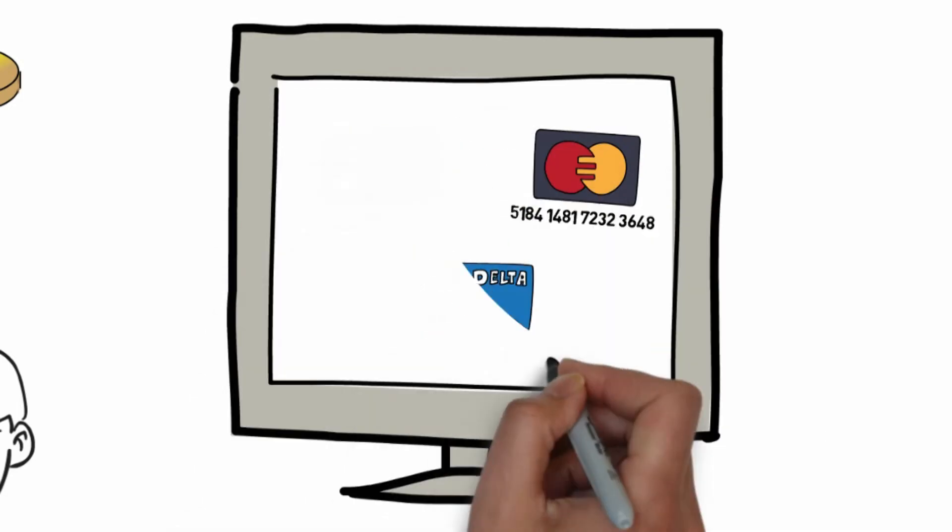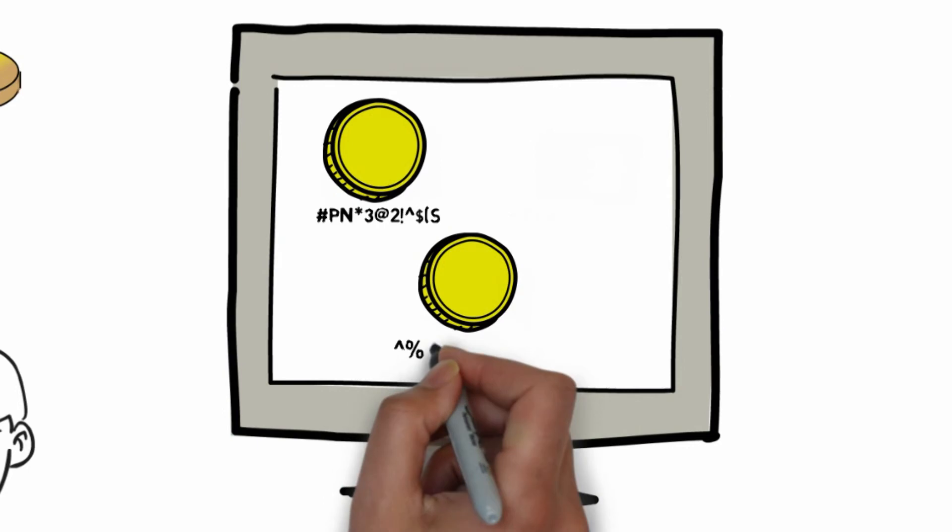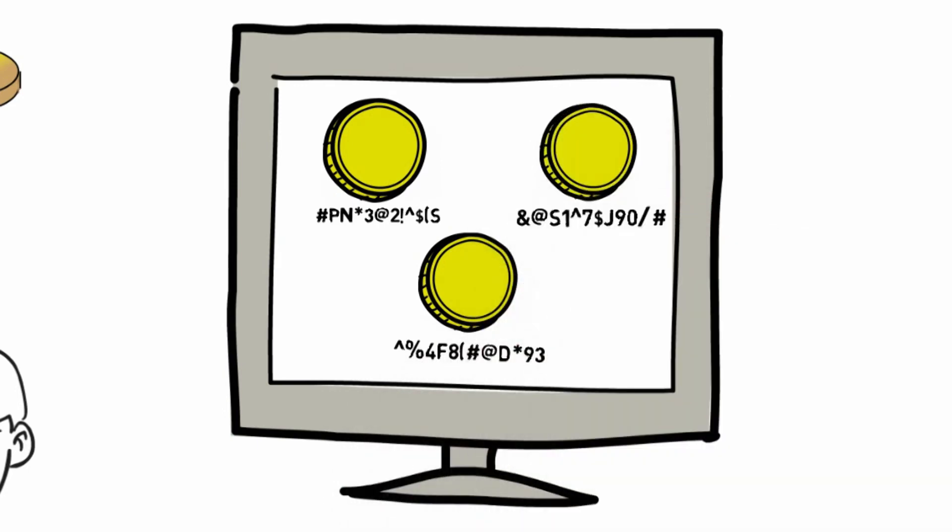Tokenization converts the credit card information into completely unrelated tokens of information that can be decoded and is only usable within your software.